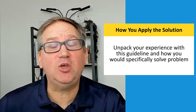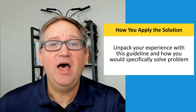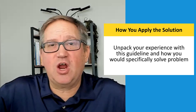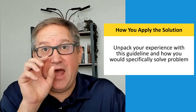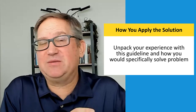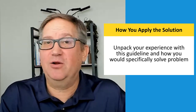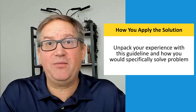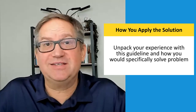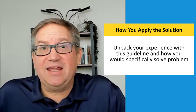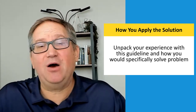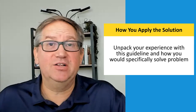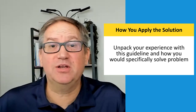Then talk about how you applied the specific solution. Unpack your experience with this guideline and how you would specifically solve this problem. You start with a manual underwrite — how do you know you have a manual underwrite? It's because you don't have an AUS approval, you don't have an automated underwriting approval. What you talk about is: if you don't have an automated underwriting approval, here is what I do as the next step. You go through the steps to determine whether they're eligible for manual underwriting or if manual underwriting is going to be a solution for them.